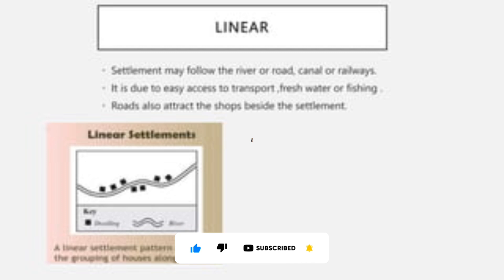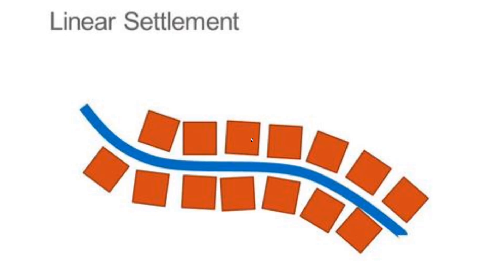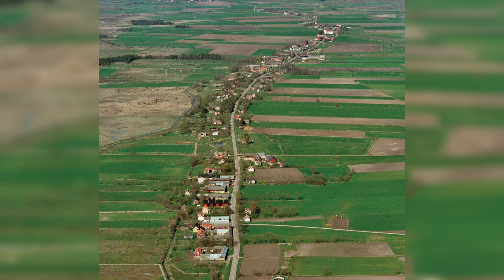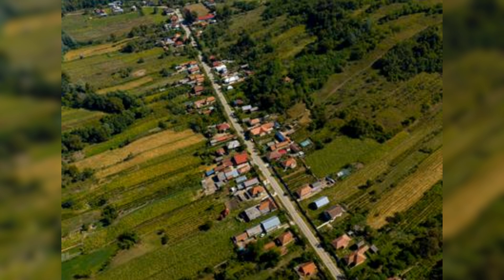Third one is linear settlements. These settlements develop along a line such as a river, road or coastline. The settlements follow the direction of the transport route or water resource, and are mainly found near roads or rivers.